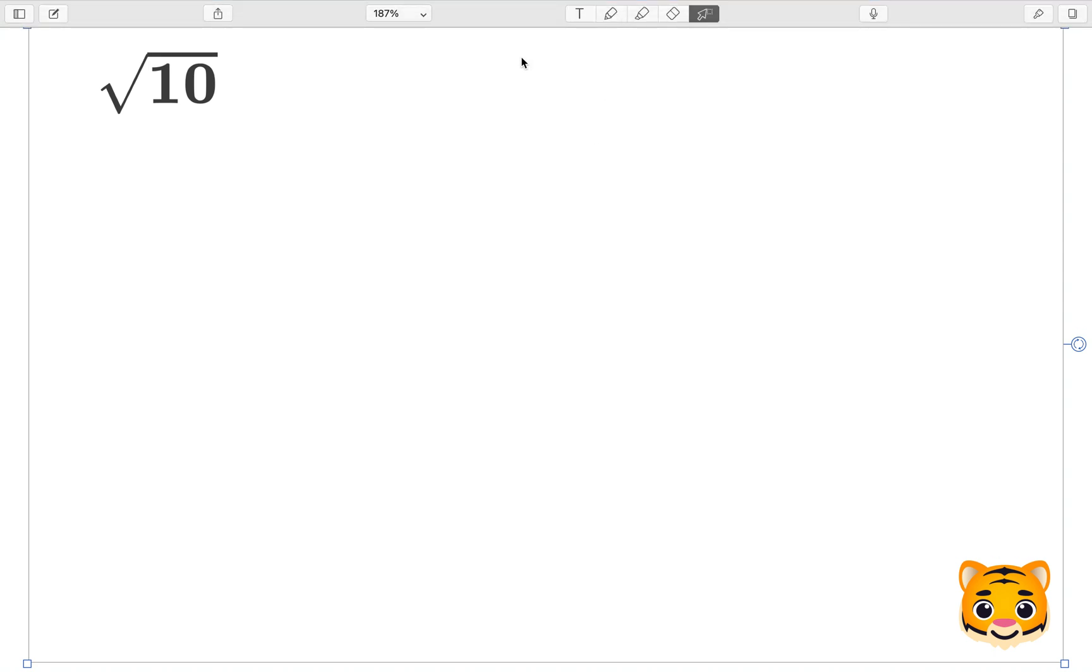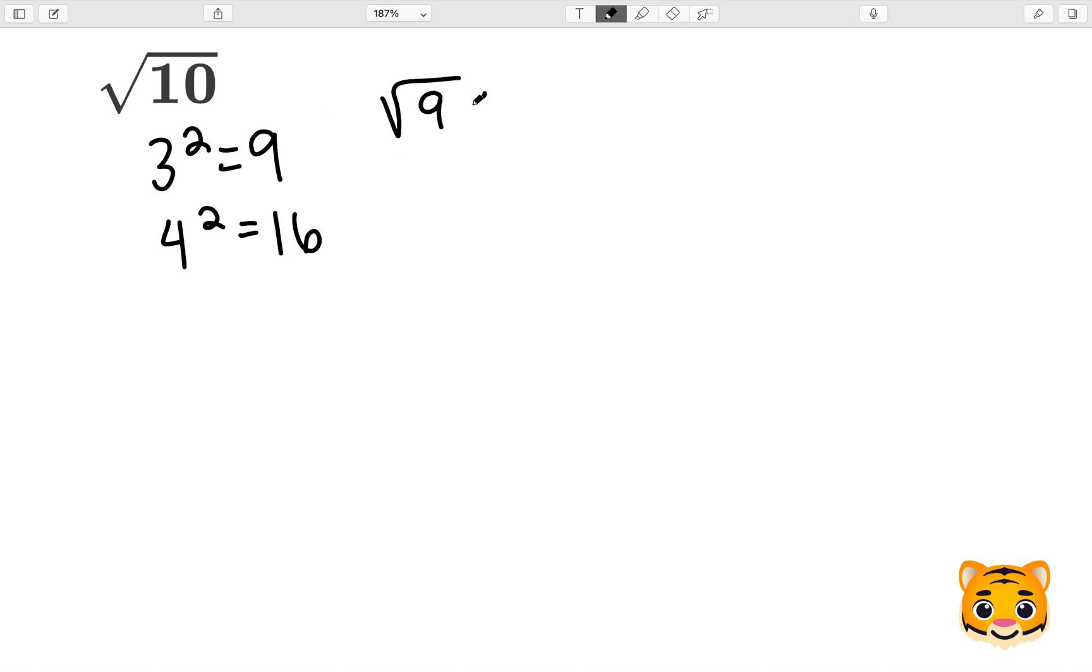Examples include 3 squared, which is 9, and 4 squared, which is 16. Now we can rewrite this as an inequality by acknowledging the fact that 9 is between 10 and 16. We can then write the square root of 9 is less than the square root of 10, which is less than the square root of 16.